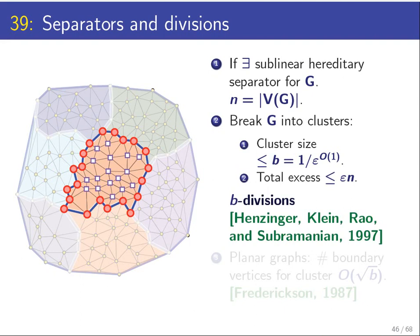For our purposes we care about how many vertices are on the boundary. For technical reasons, a vertex on the boundary is counted every time it appears on the boundary of a patch, so a vertex might be counted several times. This total sum of boundary vertices with multiplicity is called the excess. If you apply this recursive separator with sublinear separators, you get a partition into patches where the excess is epsilon fraction of n. This is well known for such graphs.